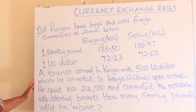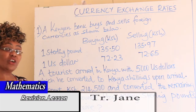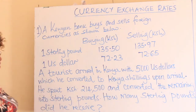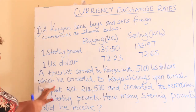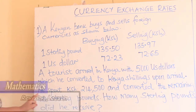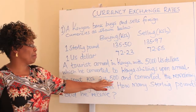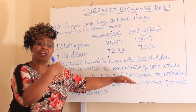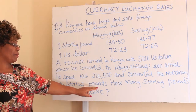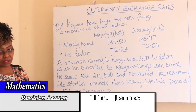Here is the question. A tourist arrived in Kenya with 5,000 US dollars, which he converted to Kenya shillings upon arrival. He spent 214,500 Kenya shillings, and converted the remaining Kenya shillings into sterling pounds. How many sterling pounds did he receive?